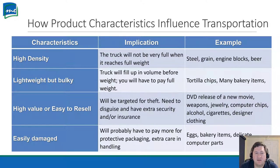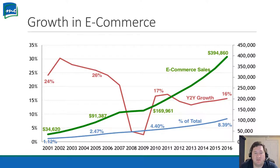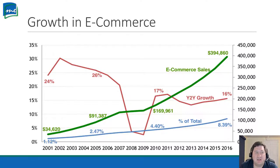Considering all these factors, let's look at industries using these transportation methods, especially e-commerce. Everybody's selling online these days and it's growing uncontrollably. In 2016, it was 394,860 — likely millions of dollars of inventory driving on the roads due to e-commerce sales. The year-to-year growth, shown by the red line, ends at 16% — meaning from 2015 to 2016 it grew 16%. Over 8% of transportation is because of e-commerce. Pretty amazing.